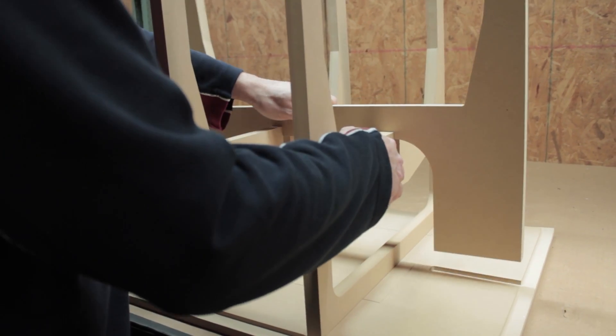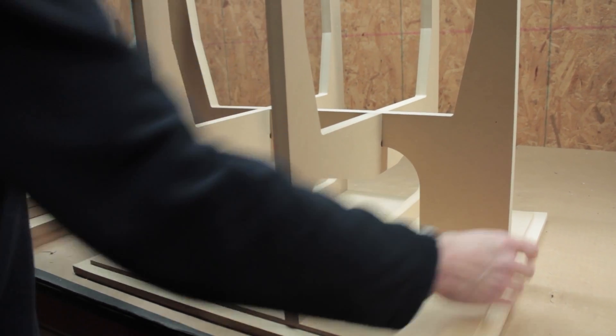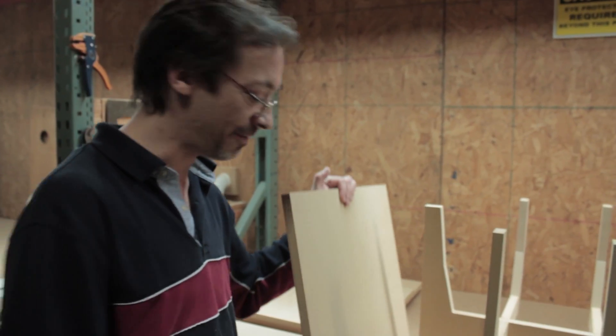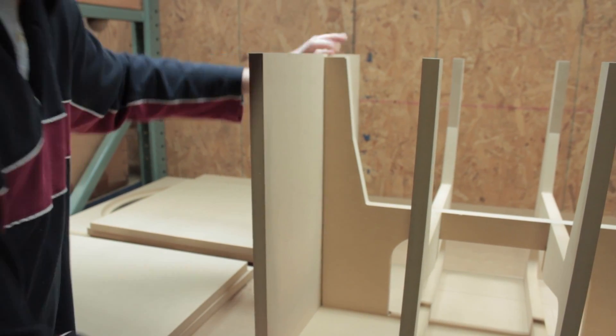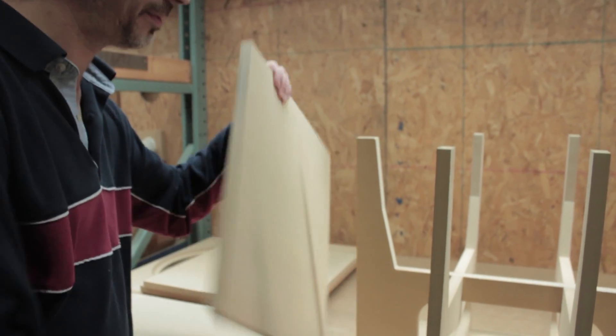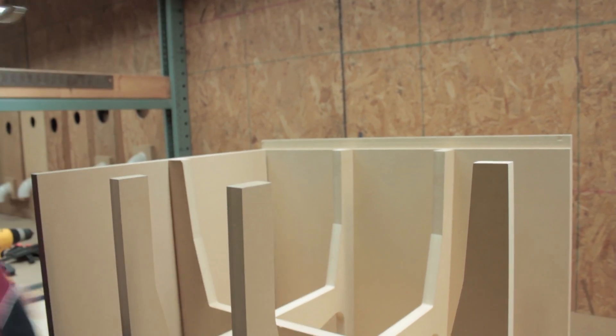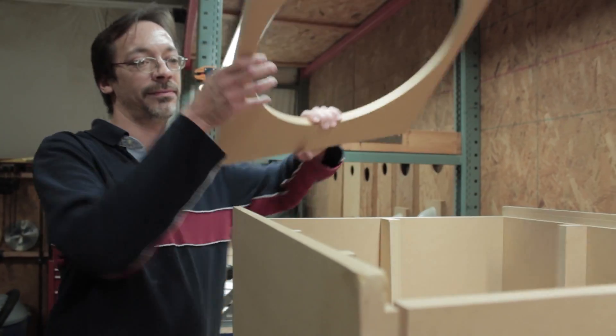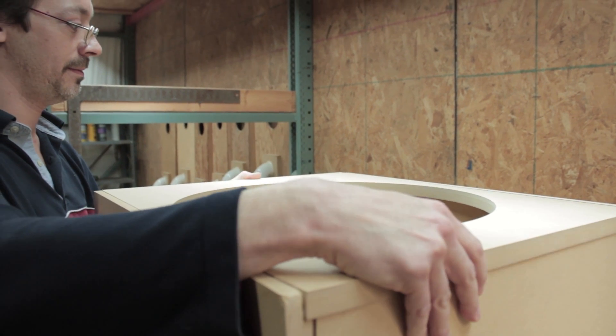To start off, setting the braces down in the dados. Don't have to worry about everything being square quite at this point. This is one of the reasons why we dry fit. This particular piece is about an eighth of an inch longer in one direction than the other, and you don't want to find that out in the middle of your gluing.